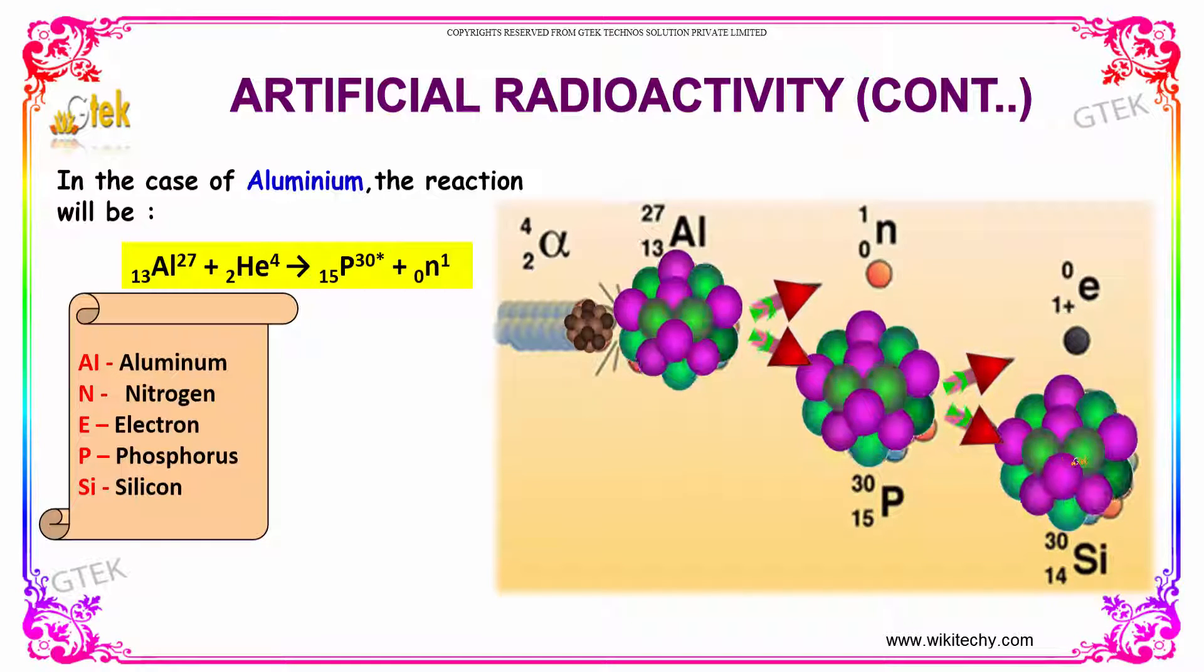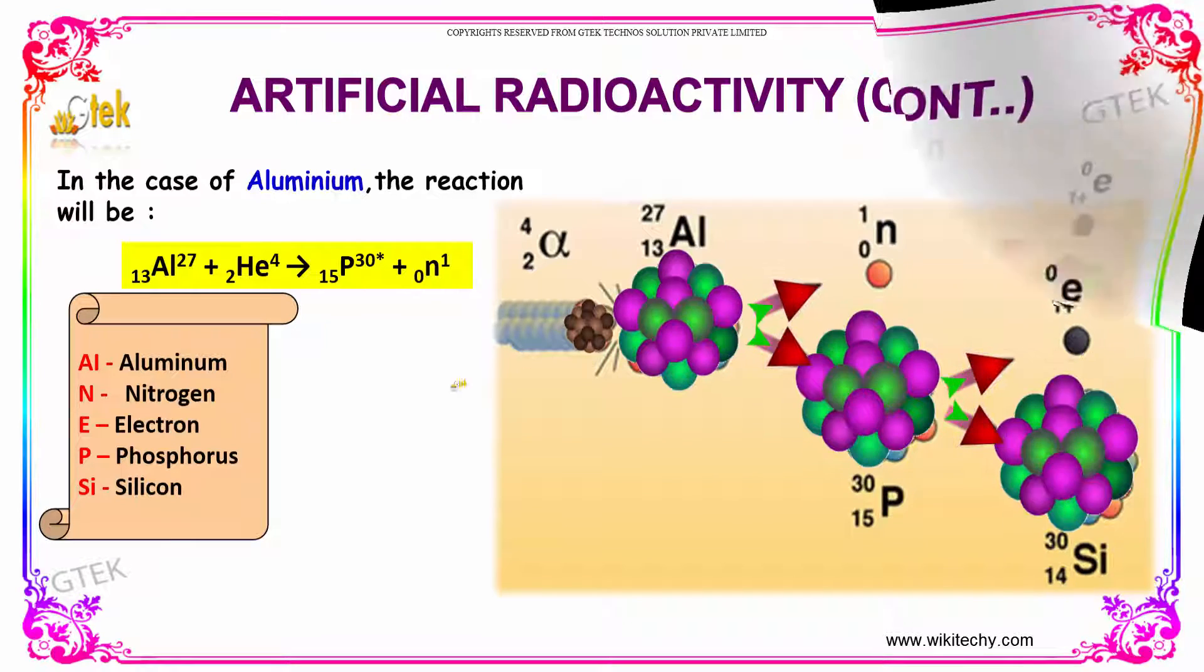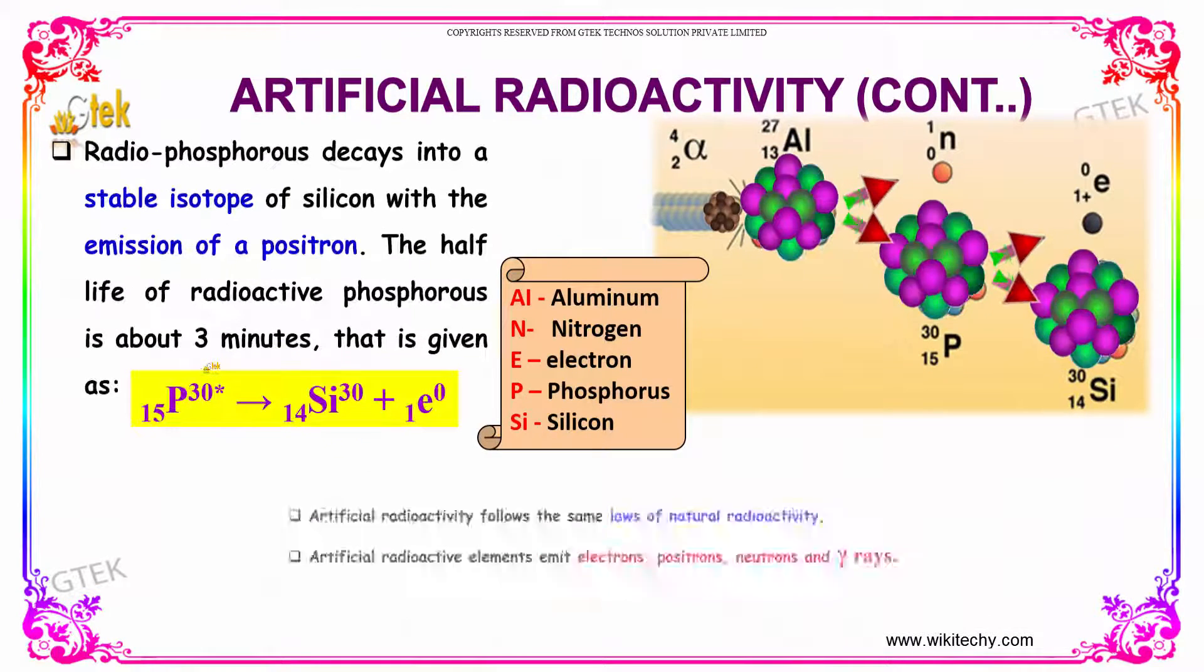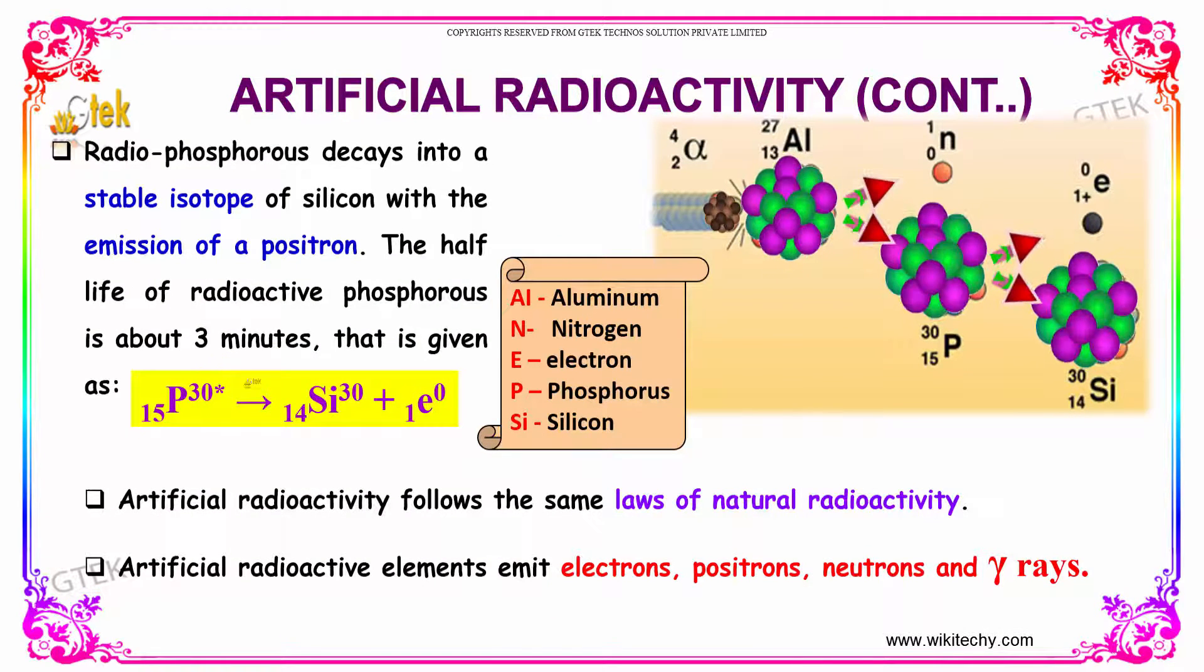The unstable phosphorus becomes stable silicon with the emission of a positron.